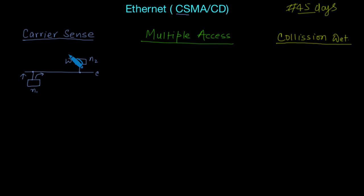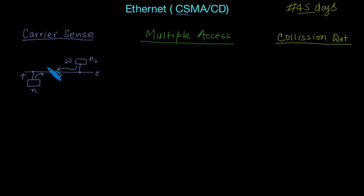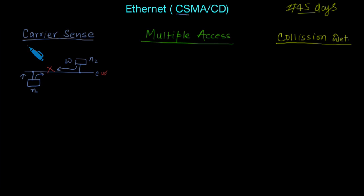Let's say node N1 tries to send some data over the carrier to some node. At the same time, while N1 is still using the carrier, node N2 also tries to transfer data over this channel. In this case, collision occurs, which creates a problem. Both nodes are trying to use the carrier at the same time — this is the collision scenario.